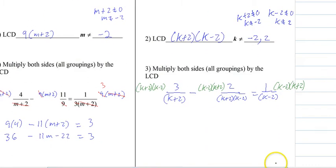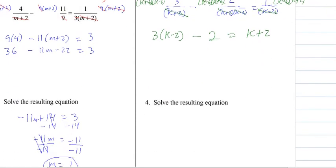So now we can just cancel. k plus 2 with k plus 2. So we have a 3 and a k minus 2. They all cancel, which leaves us with a minus 2. And then over here, the k minus 2. So now we have a k plus 2. And there's our equation we get to solve.